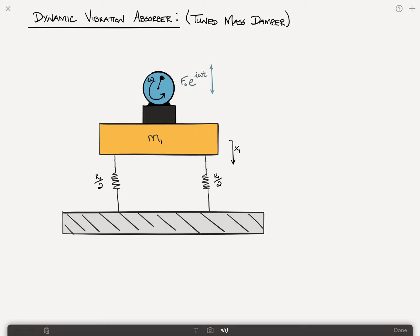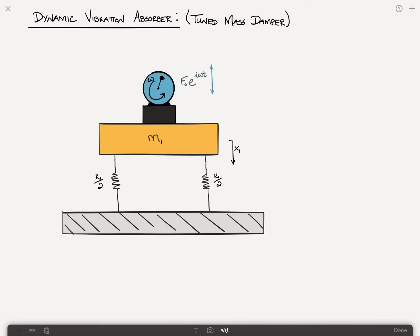In this lecture we'll discuss dynamic vibration absorbers, sometimes called tuned mass dampers. The idea is that we have a mass-spring system with a motor running on top of it that has an imbalance. As a result, it imparts a force of F₀·e^(iωt), a harmonic force, to this mass-spring system. When omega starts to approach the natural frequency of the system, we get a very big response.